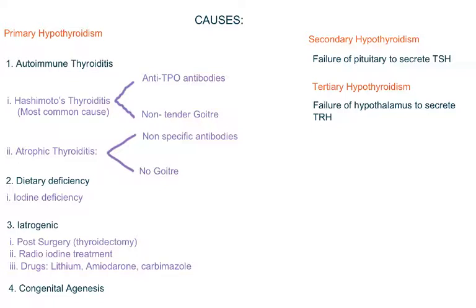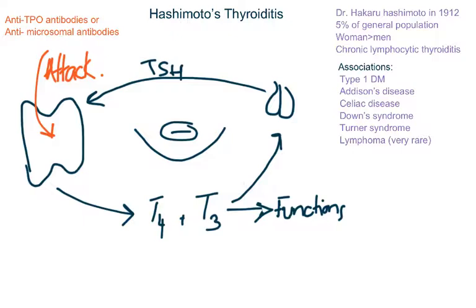Finally, congenital agenesis means failure of the thyroid gland to develop during embryonic growth. In the textbooks you will come across secondary and tertiary hypothyroidism, but they are very rare in clinical practice. Secondary hypothyroidism is due to failure of the pituitary gland to secrete TSH due to a pituitary tumor, and tertiary hypothyroidism is due to failure of the hypothalamus to secrete TRH due to some hypothalamic lesion.